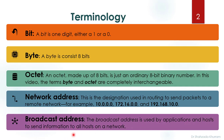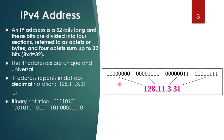An IPv4 address is 32 bits long. These bits are divided into four sections referred to as an octet or a byte, and the four octets sum up to 32 bits. IP addresses are unique and universal. The IP address is represented in dotted decimal format.